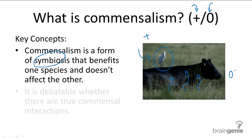But here's the catch — scientists still debate over whether this is true commensalism. For example, the cattle could benefit when the egrets remove ticks and other parasites found on their bodies, and the egrets can warn the cattle of approaching predators by flying off.